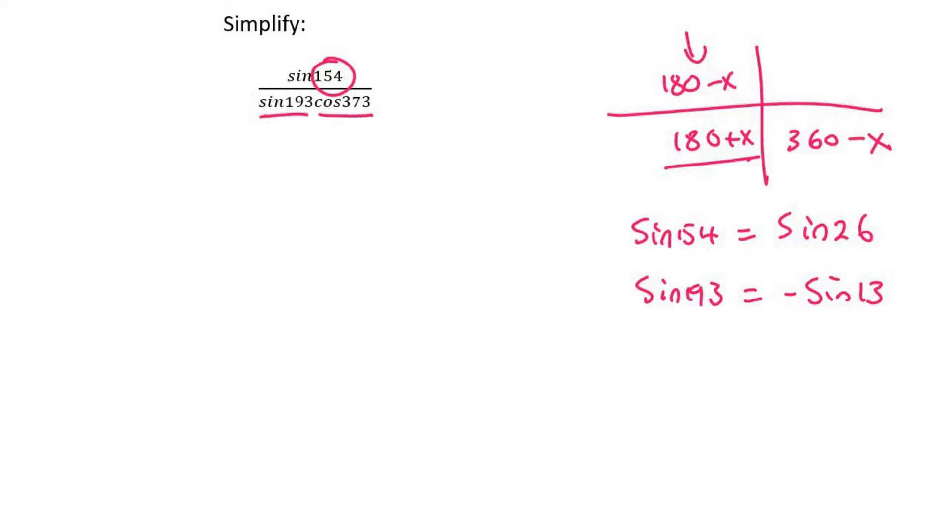And then this one over here, this might confuse some of you. So 373. Now that's not a nice angle because that doesn't really fit on the cost diagram. So when this happens, you can minus 360. That's going to give us cos of 13. So cos of 373 is just going to be cos 13.